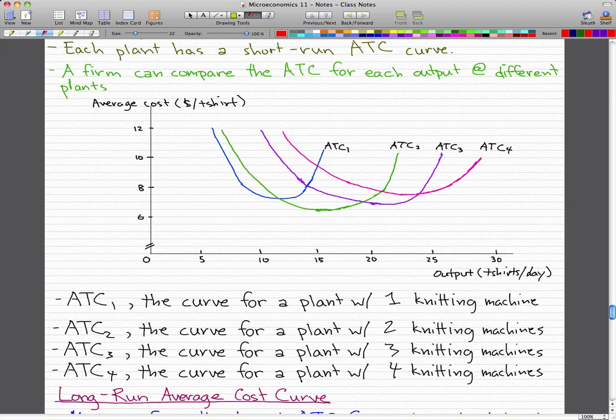ATC3 is the ATC curve for a plant with three knitting machines, which is the purple curve. ATC4 similarly is the average total cost curve for a plant with four knitting machines, so the pink curve.